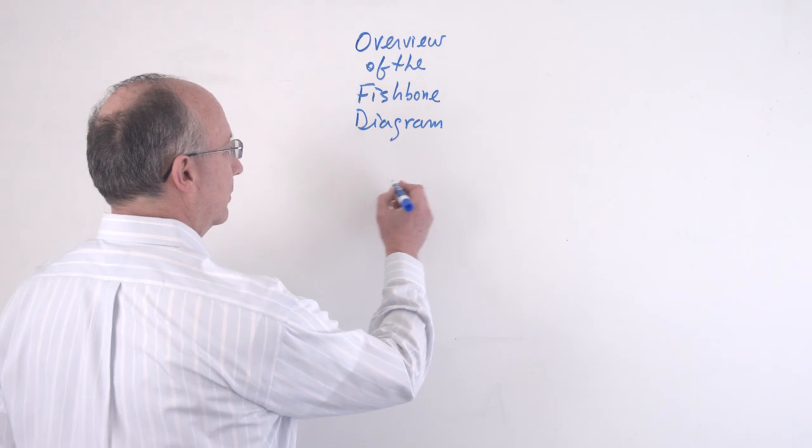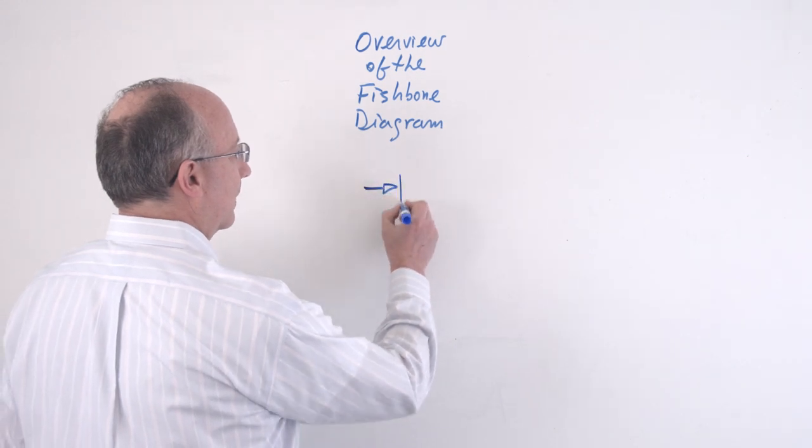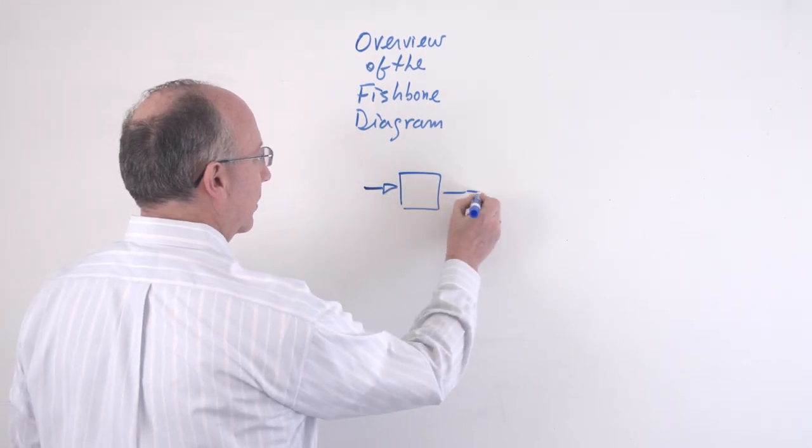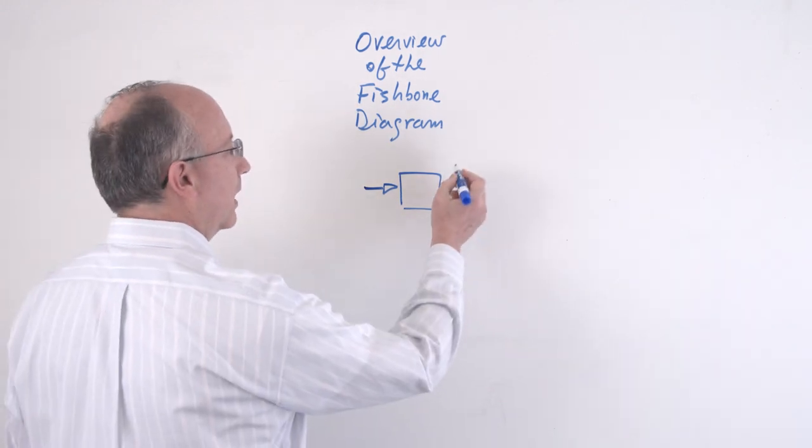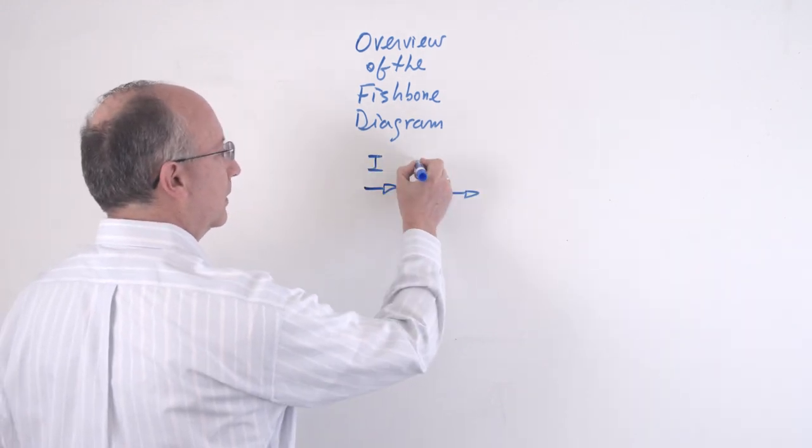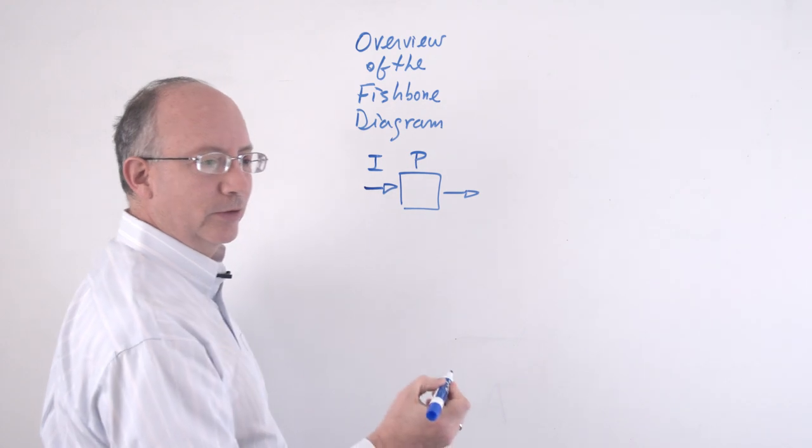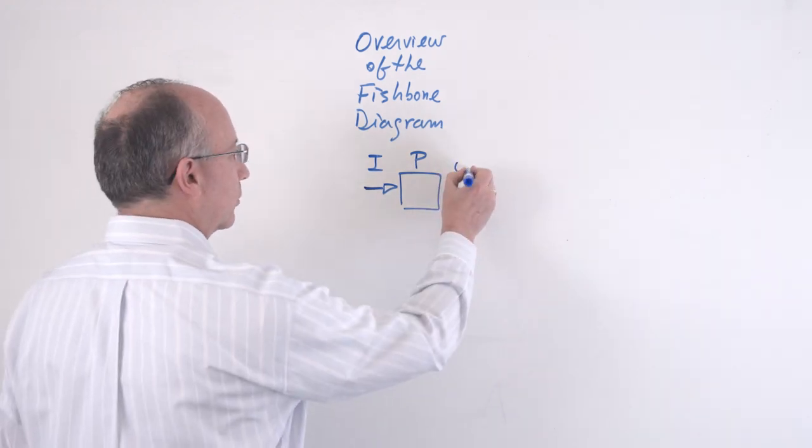When you look at the most basic diagram of a process, this would be a process where you have inputs over here, a process or a series of steps that we're taking, and the corresponding output.